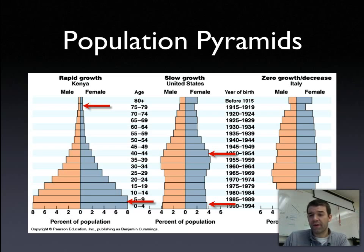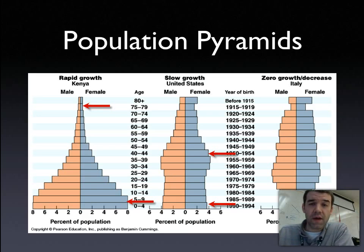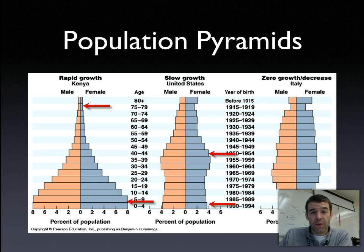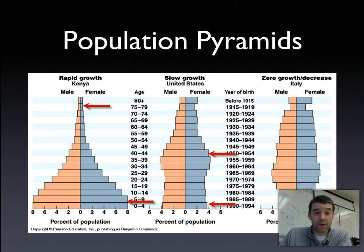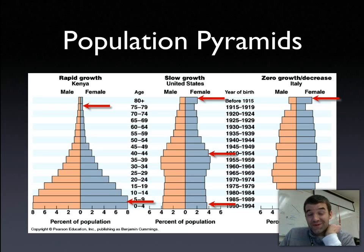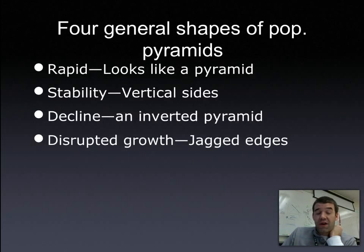When we look at Italy, we start to see a narrower base — it's no longer really a pyramid. The cohorts of young people in Italy are smaller than the adult populations. As the older people begin to die off, we're going to see an actual decline in population because they're not being replaced by young people the way you'd find in Kenya. We can also see factors like gender — what is causing females to live longer? There's all kinds of analysis we can do with population pyramids.